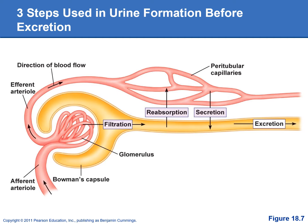In reabsorption, we want to save the valuable things from the urine — things like glucose, amino acids, and vitamins — and put those back into the peritubular capillaries. Secretion is when we have extra waste products that we didn't filter on the first pass through the glomerulus; we can secrete them into the filtrate and excrete them out into the urine.